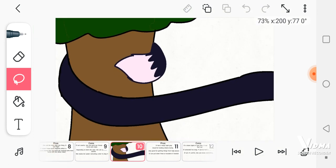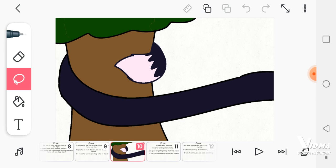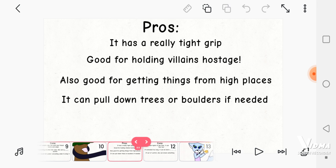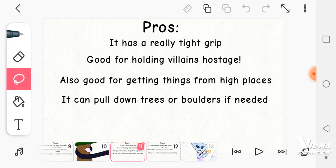Now Chloe. She can just sort of extend her tail. Pros, it has a really tight grip, as shown on this tree here. Two, good for holding villains hostage. Three, also good for getting things off of high places. And four, can pull down trees and boulders if needed.